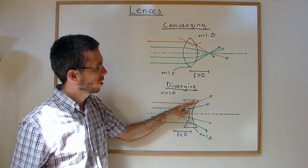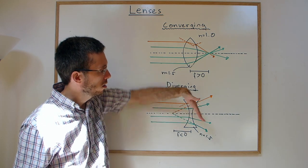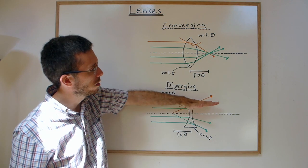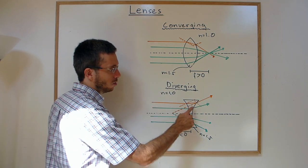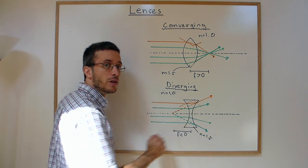Then when going from the higher index to the lower index, you're bending further away from the normal. In this case, all the rays are spread out - they are diverging.